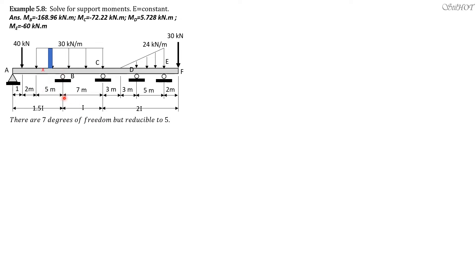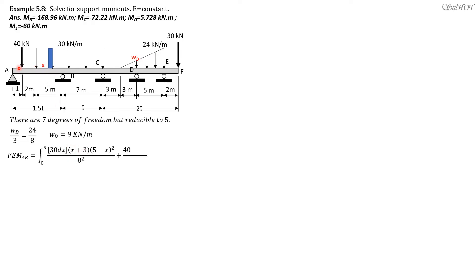The distributed load WD is 9 kilonewton per meter. Fixed end moment AB is the integral from 0 to 5 of 30 dx times (x plus 3) times (5 minus x) squared over 8 squared, plus 40 times 1 times 7 squared over 8 squared.